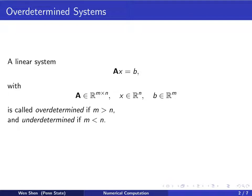The system is called overdetermined if m is bigger than n. That is, the number of equations is more than the number of unknowns, and it is called underdetermined if m is less than n.